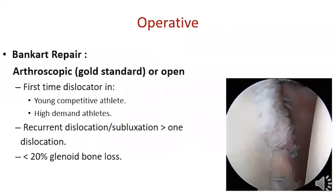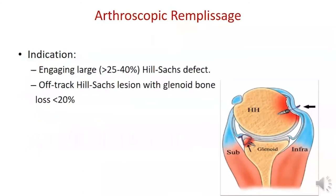Operative treatment for shoulder instability may address soft tissue or bony deficiency. Arthroscopic Bankart repair is the gold standard for Bankart lesions. It is indicated for first-time dislocation in young competitive athletes or in recurrent dislocation with glenoid bone loss less than 20%. For engaging Hill-Sachs lesions of 25–40%, arthroscopic remplissage is added, filling the Hill-Sachs defect with the posterior capsule and infraspinatus.